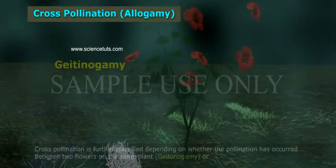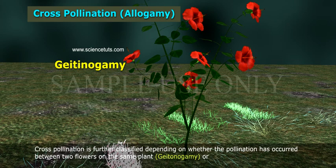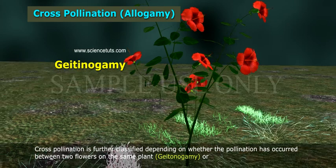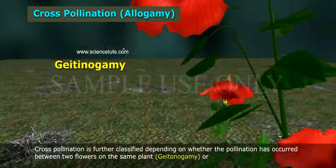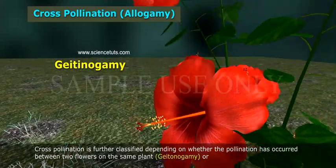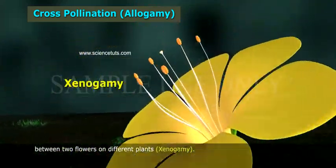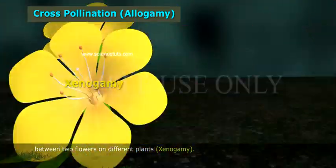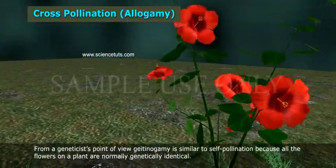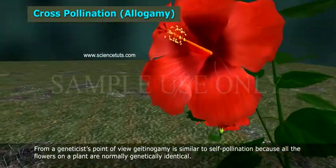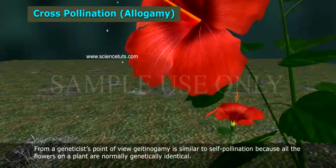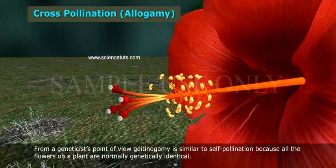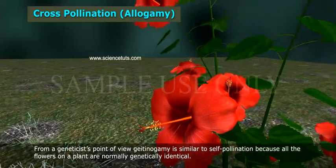Cross-pollination, or allogamy, is further classified depending on whether the pollination has occurred between two flowers of the same plant — geitonogamy — or between two flowers of different plants — xenogamy. From a geneticist's point of view, geitonogamy is similar to self-pollination because all the flowers of a plant are normally genetically identical.